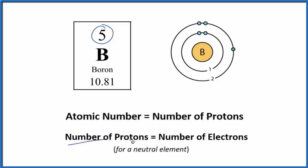The number of protons also equals the number of electrons for a neutral element. And boron, like all the elements listed on the periodic table, they're listed as neutral. So we have five protons and five electrons for boron.